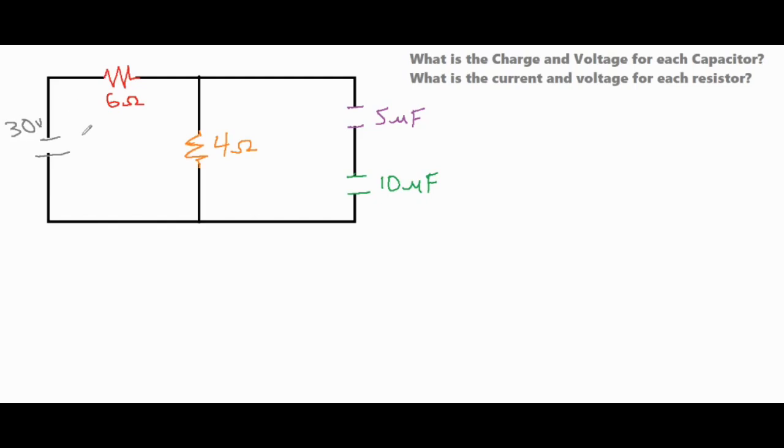So if we're taking a look at this circuit, we have a 30 volt source, and it's going to move everything through a 6 ohm resistor, and then there's two parallel branches, one with a 4 ohm resistor and the second one with two capacitors.